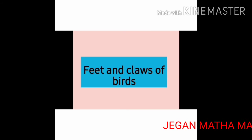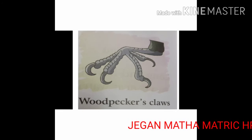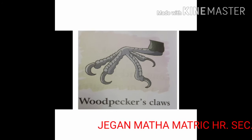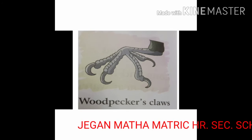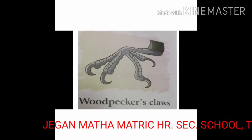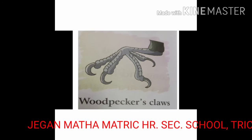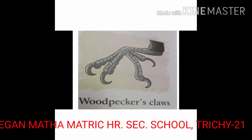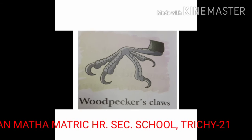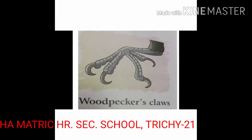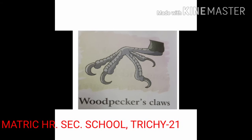Next, we are going to learn about feet and claws of birds. Birds have different types of feet depending upon the places where they live. Birds that sit on the branches of trees such as crow and sparrow have feet that help them to hold the branches tightly. Their feet have four toes in some birds like sparrow, three toes in front and one at the back. A woodpecker's foot has four claws, two facing forward and two facing backward.